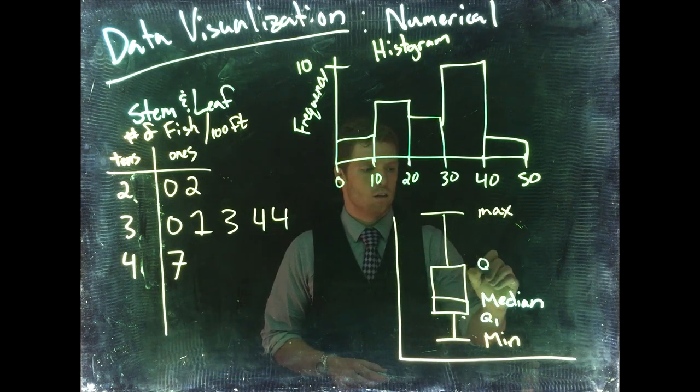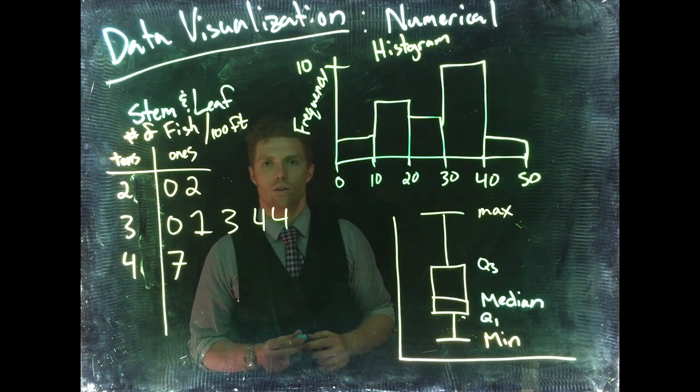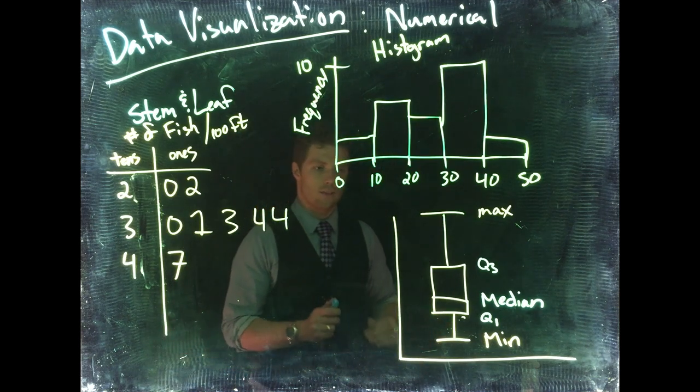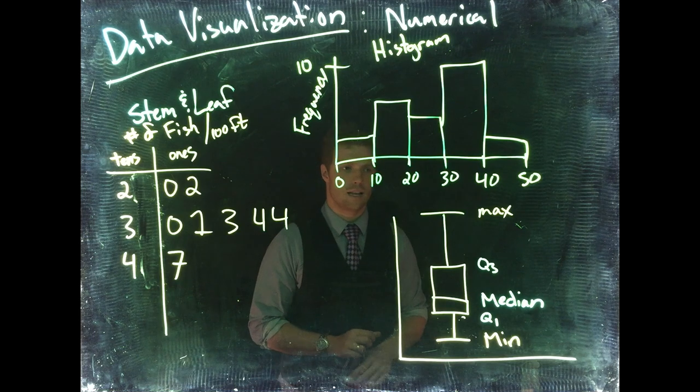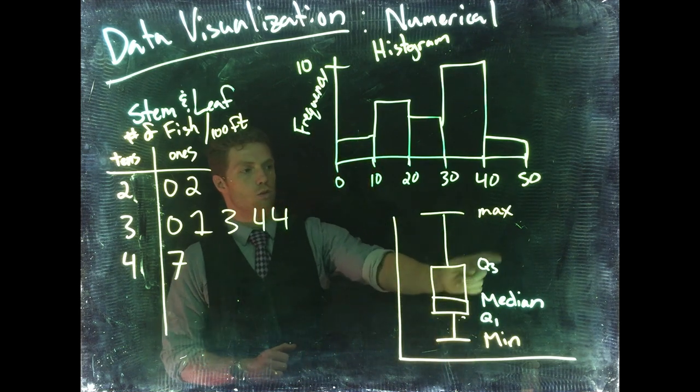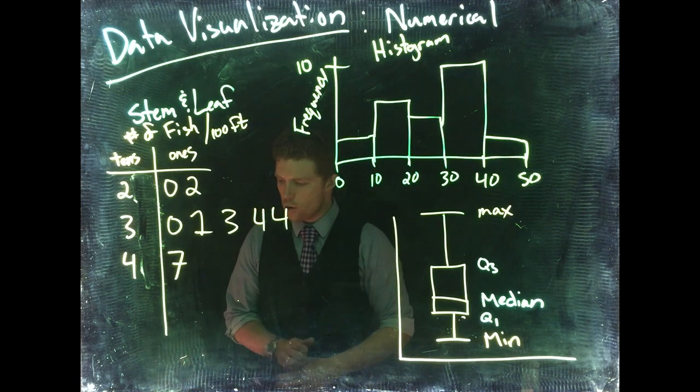The very middle one is our median, or the middle value of all our data. Then we've got what's called Q1, which is quartile one, and Q3, which is quartile three. They're the middle points of the upper 50 percent of the data and the lower 50 percent of the data. These numbers—minimum, Q1, median, Q3, and maximum—are known as our five-number summary.